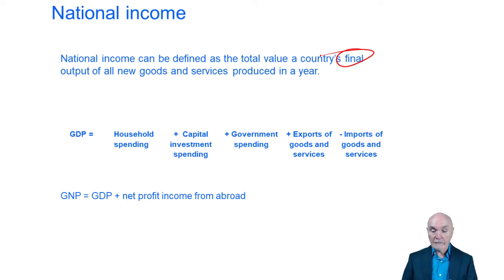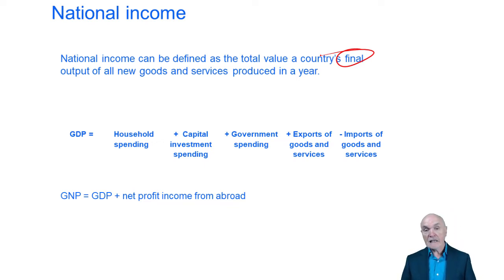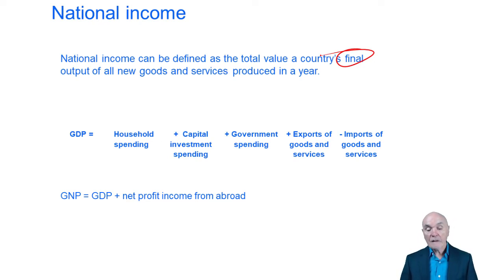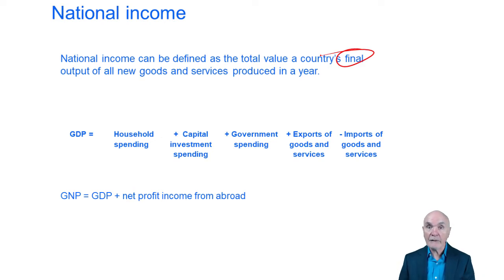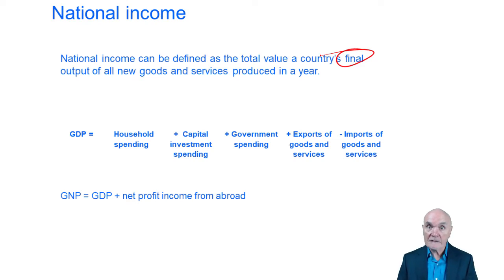National income is made up of household spending on food, groceries, cars, televisions — anything we spend money on, including rent. Plus capital investment spending by companies: when a company buys a machine as a non-current asset, that machine is not going to be sold on to the public, so that counts as a final purchase. When a company buys raw materials that are sold on, you get the double-counting problem — but buying a machine is a final output.